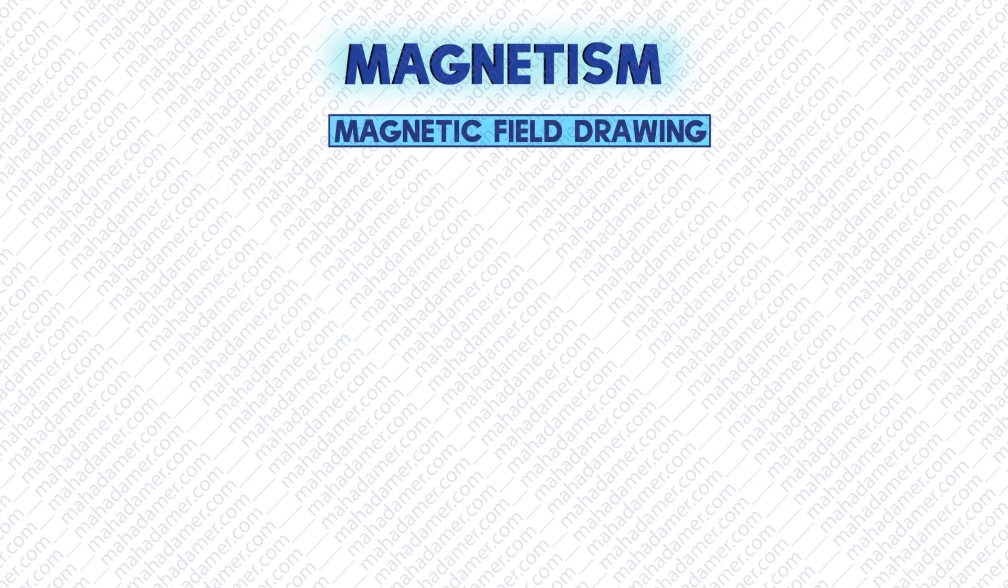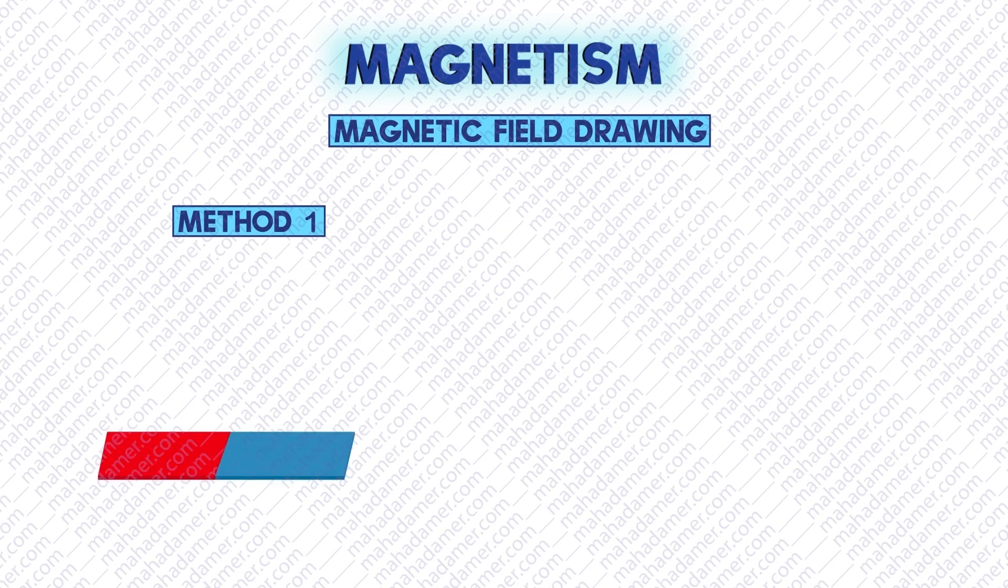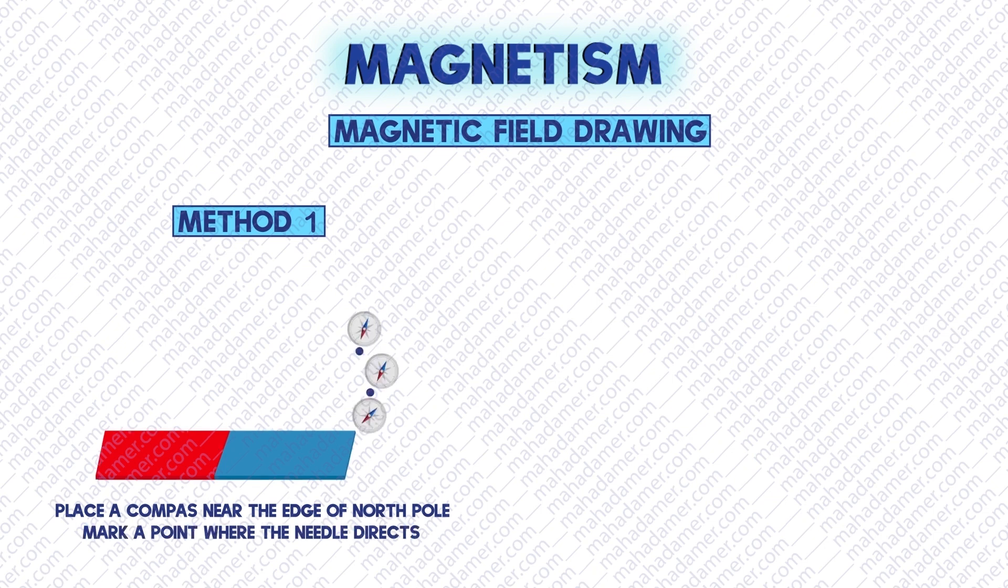There are two methods of drawing a magnetic field. First method is called a compass method. We place a compass near the edge of the magnet. We put a point where the needle directs. We repeat this experiment replacing the compass on each point. And after that, we join all the dots together so that the field can be created. This gives us the perfect drawing of a magnetic field.